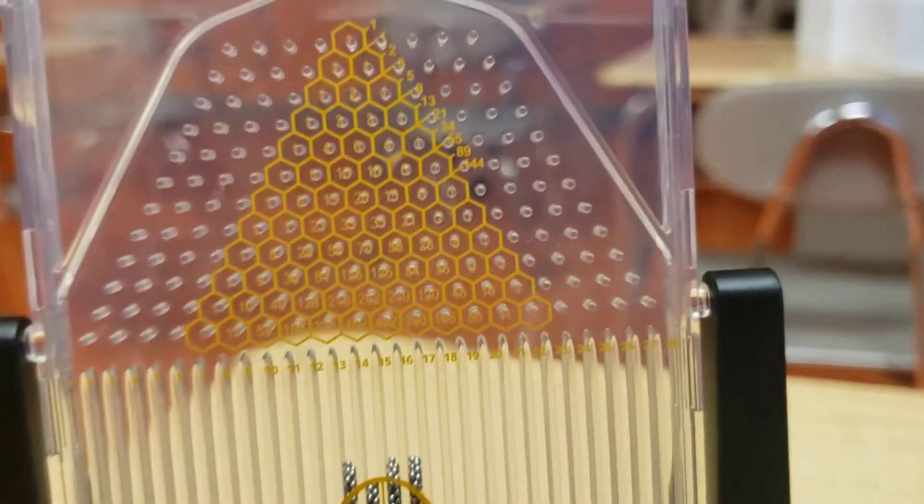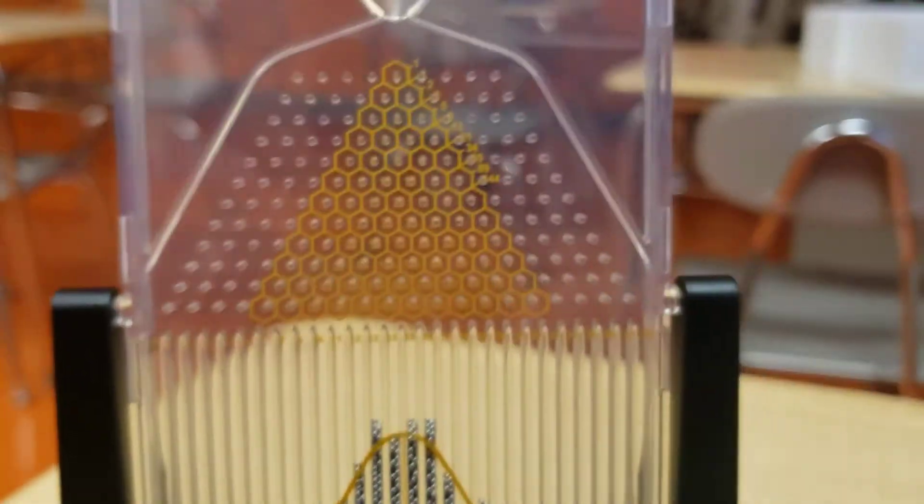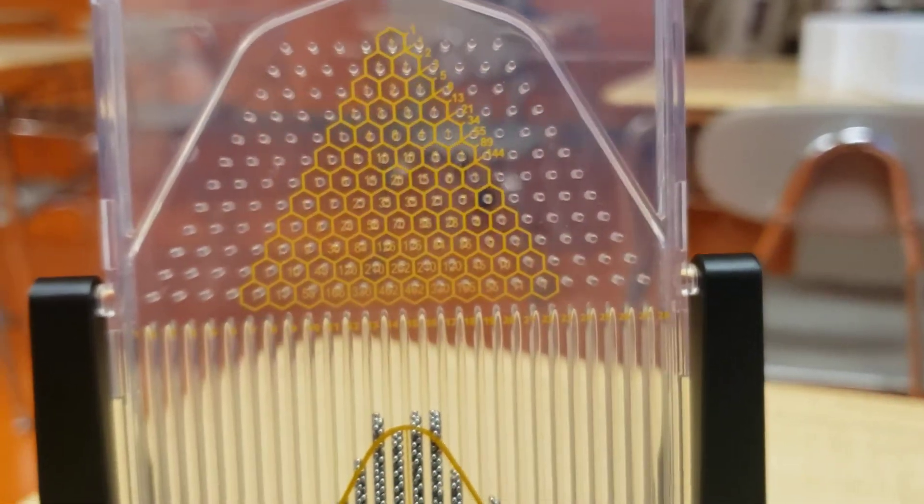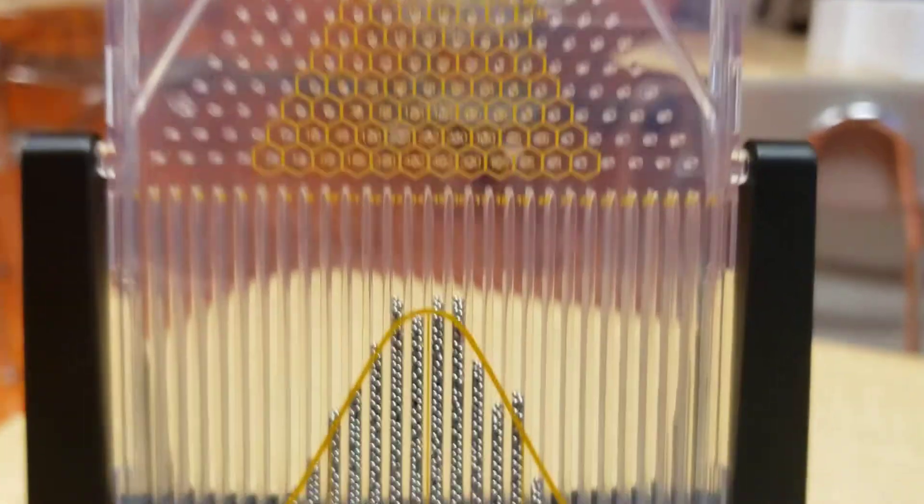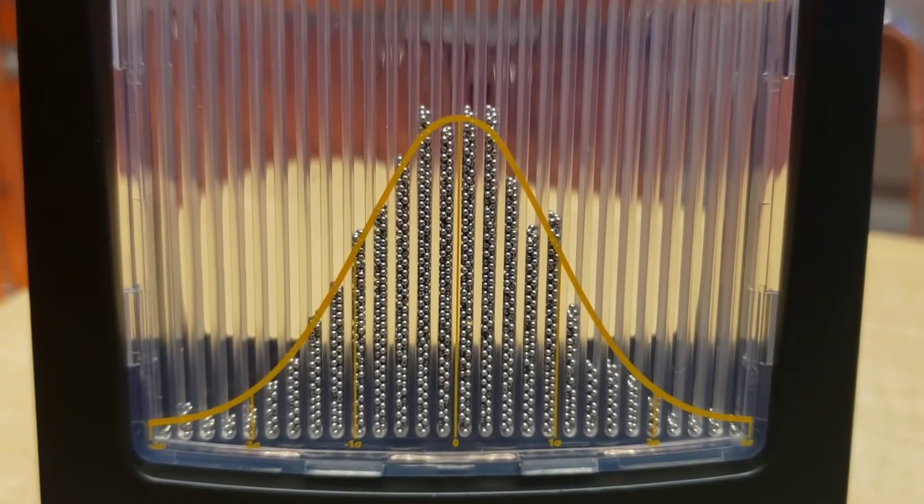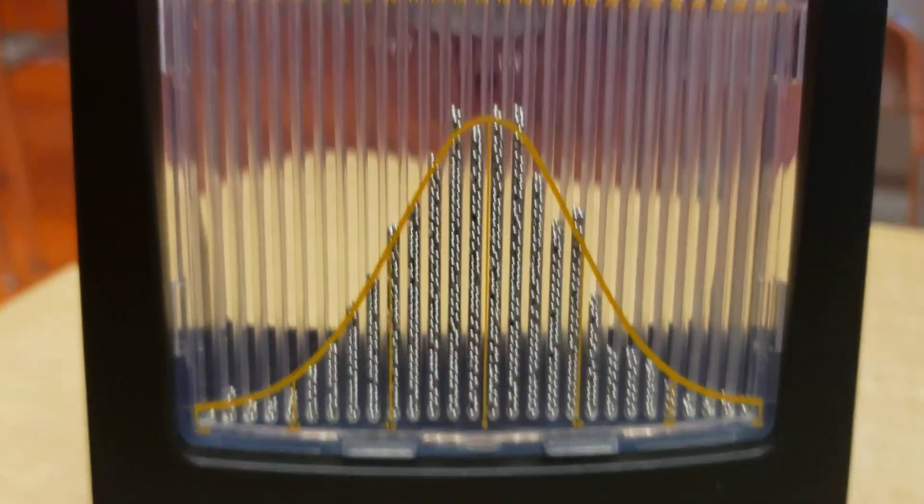Now, if we were to talk about something called trinomial, that would be three choices, okay? But we don't do that in here. We focus primarily on binomial, and this one just so happens to make a normal distribution, which is pretty awesome.